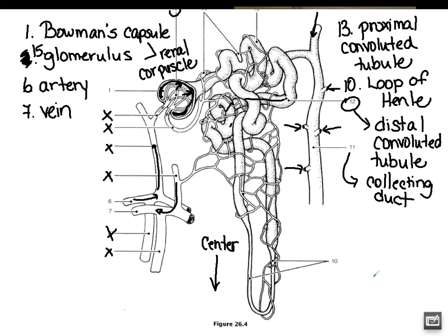The collecting duct feeds in and eventually goes to a minor calyx, turning into a major calyx, and then down into the pelvis. That leaves number 14 — you can see we've got a capillary bed, essentially a capillary web, all over the different tubules. That is because we have all that reabsorption that has to take place, and the only place that can happen is at a capillary — we can't diffuse into an artery or vein. So these are referred to as the paratubular capillaries, referring to the fact that they are around the different tubes.